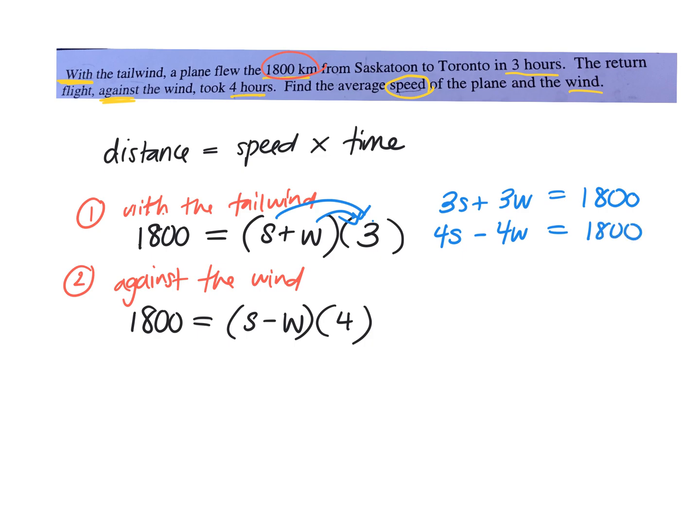So we can use substitution or elimination. Which one? So you're going to use substitution and you're isolating this variable. You chose the second equation. Good. So 4s equals 4w plus 1,800. Divide everything by 4. 4s is equal to w plus, what, 450. 450, yeah. Good, excellent.